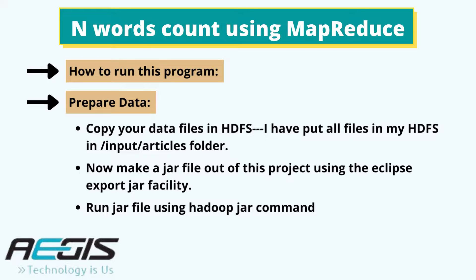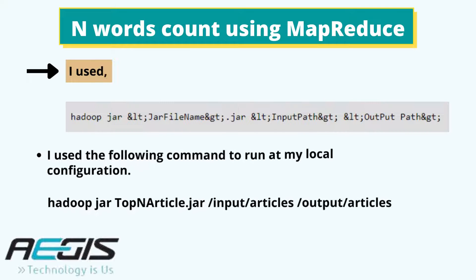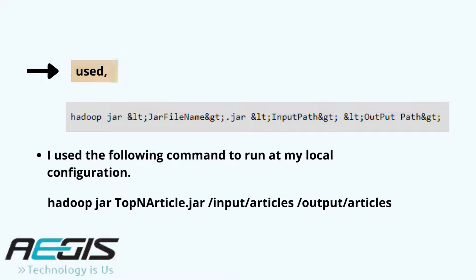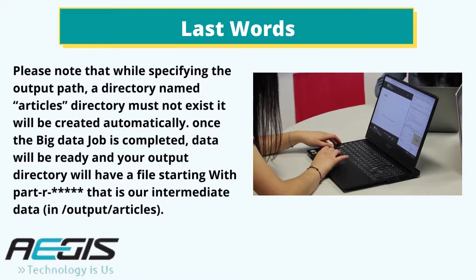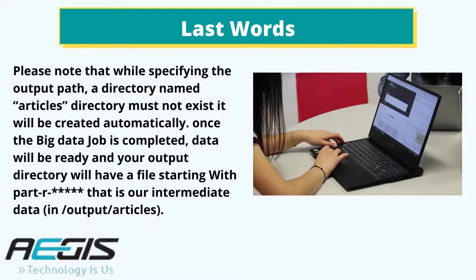To run this program, first you need to prepare data and copy your data files into HDFS. I have put all files in my HDFS in the input articles folder. Now make a jar file out of this project using the Eclipse export jar facility, then run the jar file using the Hadoop jar command. I used the command: hadoop jar TopInArticle.jar input_articles output_articles. Please note that while specifying the output path, the output directory must not already exist — it will be created automatically.